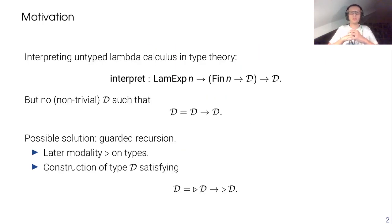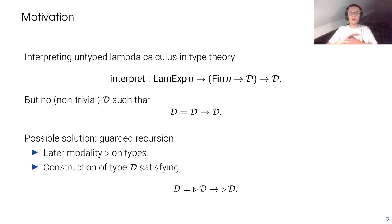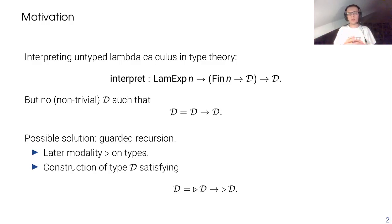Let's start with a little bit of motivation. Suppose that you want to interpret the untyped lambda calculus in type theory. We've defined an inductive data type of expressions of the untyped lambda calculus with at most n free variables, and we want to interpret these expressions as values of a certain type D, given an environment that provides interpretations for the free variables. If you try to do this, you quickly realize that you want this type D to be equal to the function type from D to D. But unfortunately, there's no such type D that satisfies this equation, and that's also non-trivial.